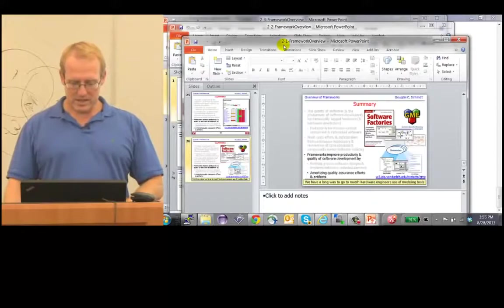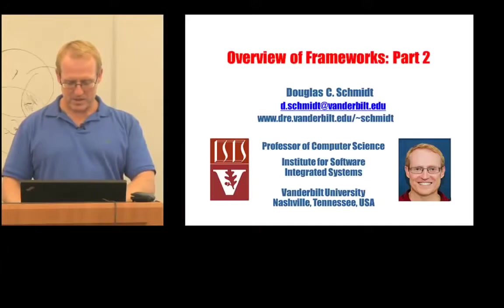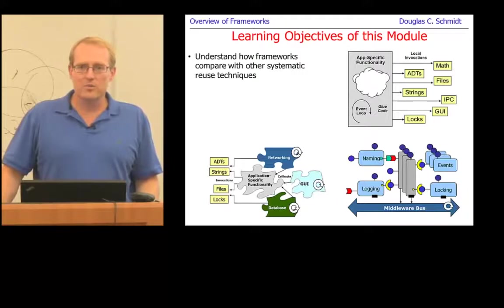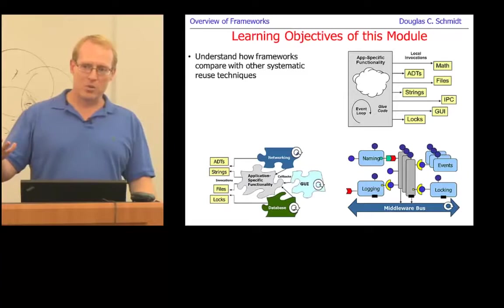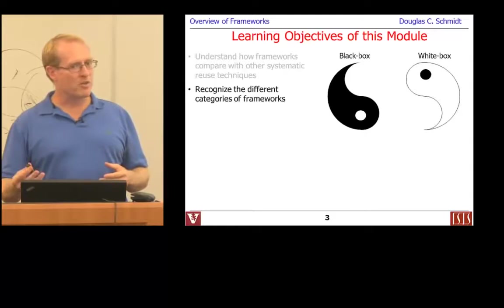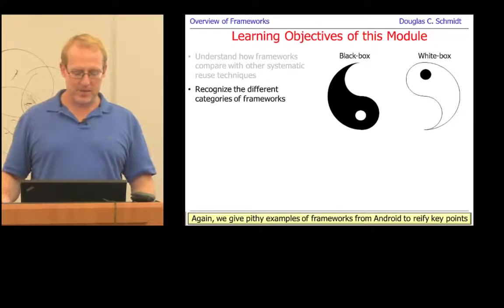So that's the end of the first framework overview slide set. In this next set of slides, we're going to talk about how frameworks compare and contrast to other forms of systematic reuse — frameworks versus class libraries, component middleware, and then the different categories of frameworks: black box frameworks and white box frameworks. Often in the real world we get a little bit of both, and we'll show some examples from Android to illustrate these various points.